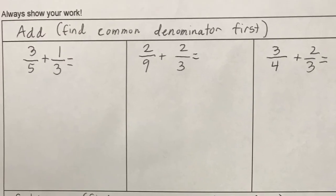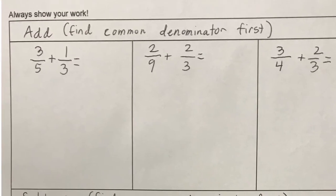So 3 fifths plus 1 third. The first thing is we need a common denominator. We have fifths here, and we have thirds here. That is not going to work. You might be able to do this step in your head, but if you can't, you need to list out some multiples. So multiples of 5: we have 5, 10, 15, 20. That should be enough.